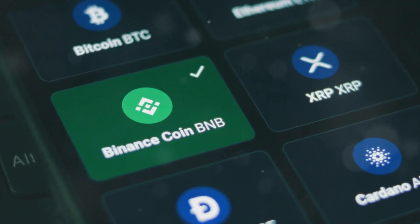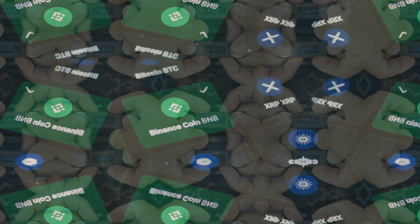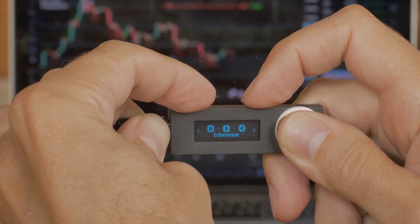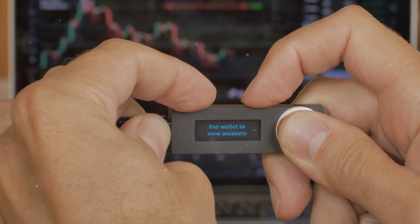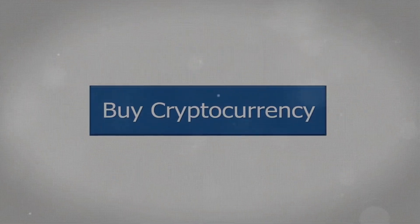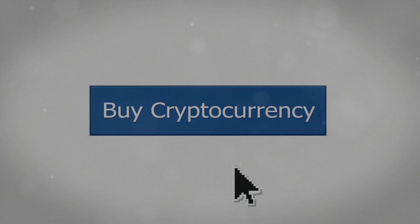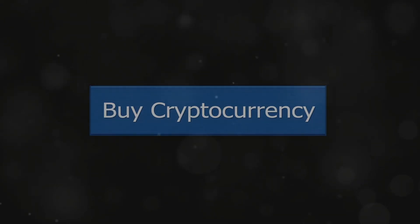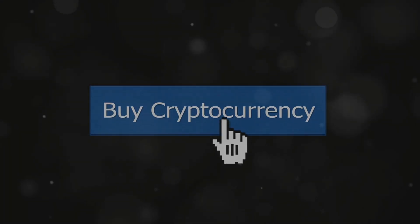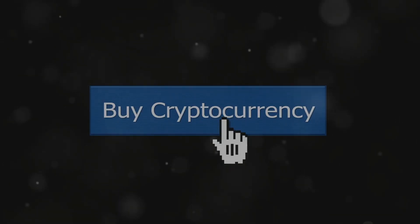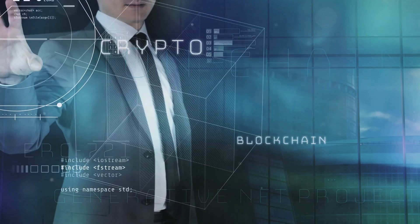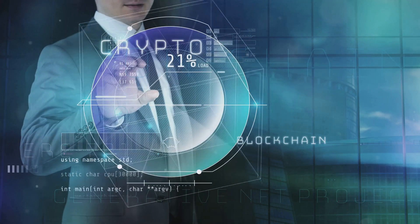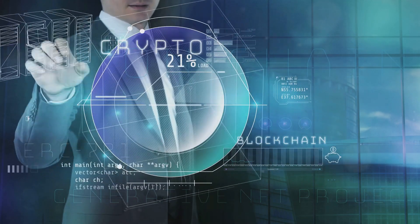Congratulations, you have successfully moved your USDT! Always remember to keep your account secure and double-check all details before making any transactions. Happy trading! After logging in, you'll see your OKX dashboard — your account's home screen showing balances and important information. To find your USDT balance, look for a section labeled Assets or Balances. Clicking on USDT will show your available balance — double-check this to make sure you have enough to cover the amount plus any potential fees.